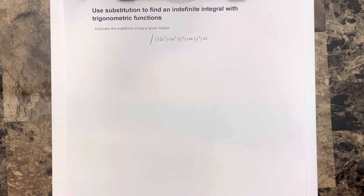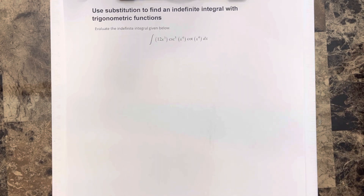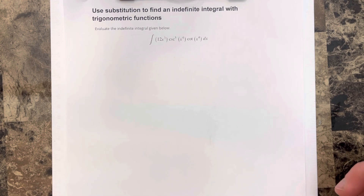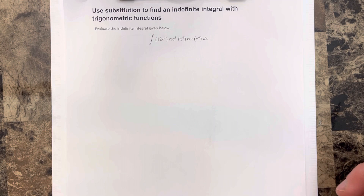In this video, we're going to use substitution to find an indefinite integral with trigonometric functions. Let's evaluate the indefinite integral of 12x cubed cosecant to the fifth x to the fourth cotangent x to the fourth dx.